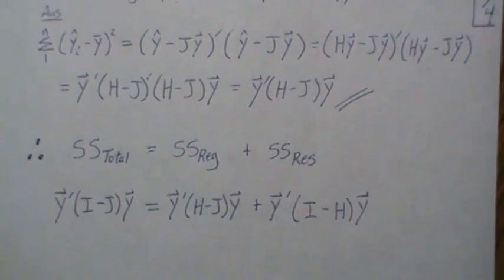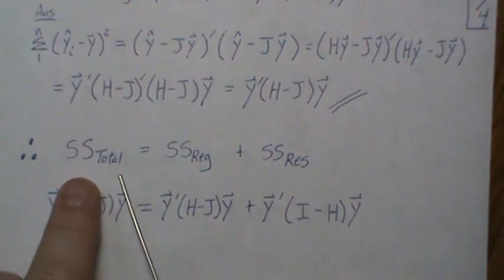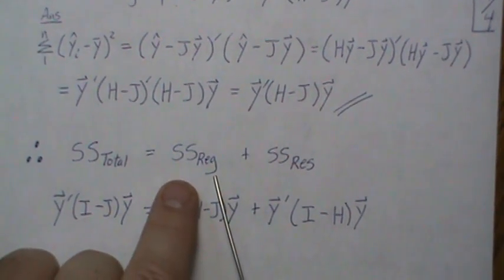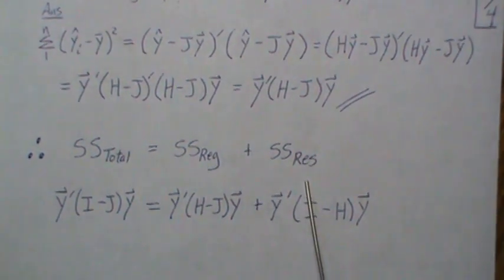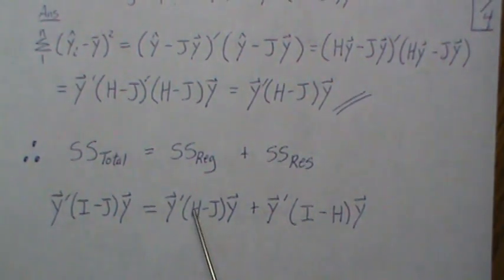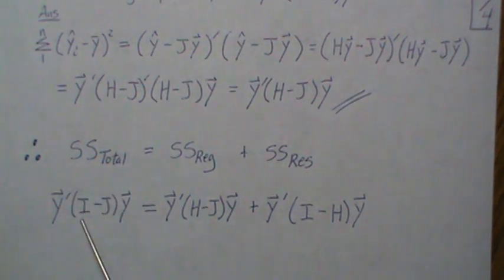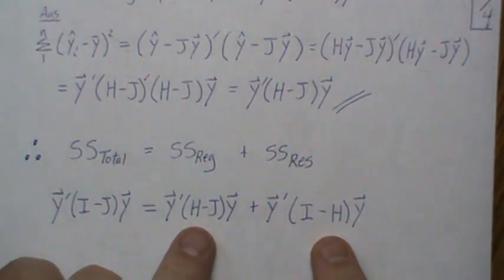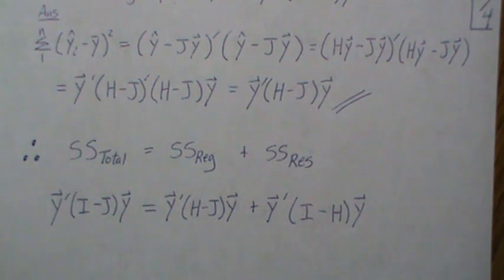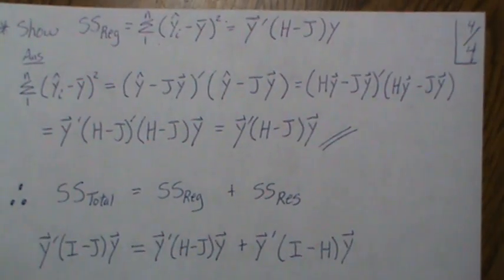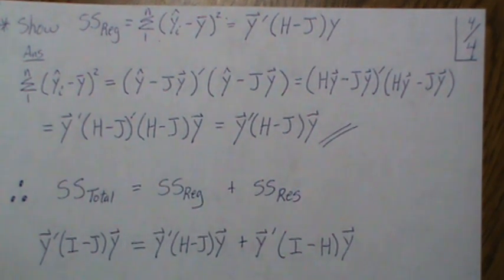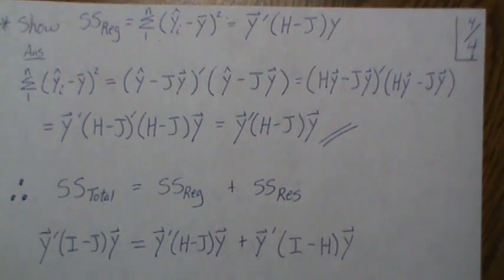In summary, in the previous video we partitioned total variability into variability associated with the regression model and variability associated with the residual. Those can now be written in quadratic form: SST = y'(I−J)y, SS Residual = y'(I−H)y, and SS Regression = y'(H−J)y. This makes it straightforward to derive the distribution of each quadratic form and discuss their relationships. We're starting to get into the exciting components of linear models — please like and subscribe so you don't miss the next one.